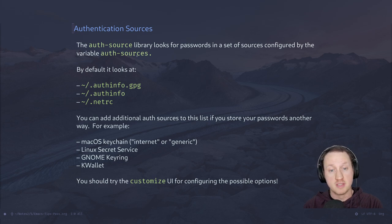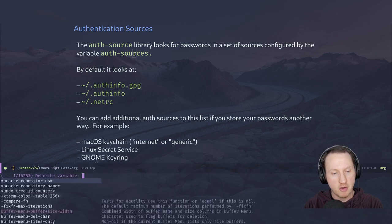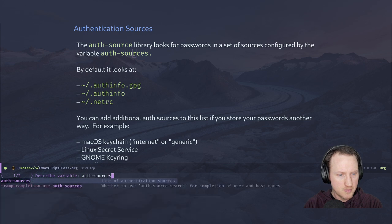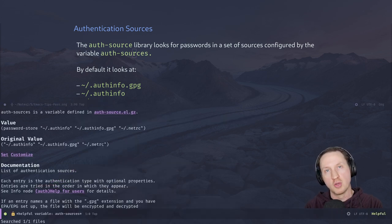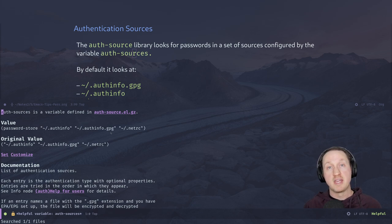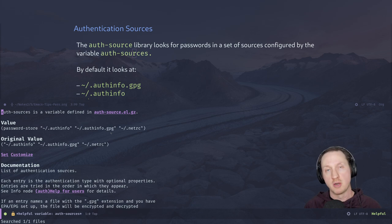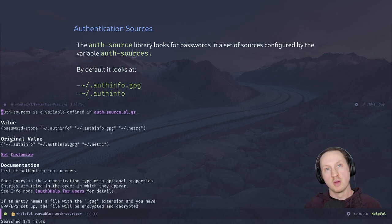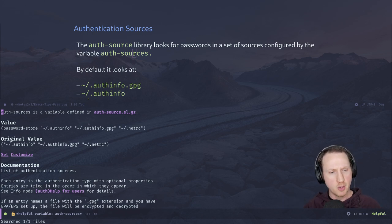If you look at the auth-sources variable — part of that library — we're going to use C-h v, describe-variable, to look that up. This variable defines which sources are used for looking up passwords. The auth-source library is used by a variety of things in Emacs: ERC, the IRC client, can use it to look up passwords for a given IRC server, and the SMTP library will also look up the password for your SMTP server when you try to send an email.